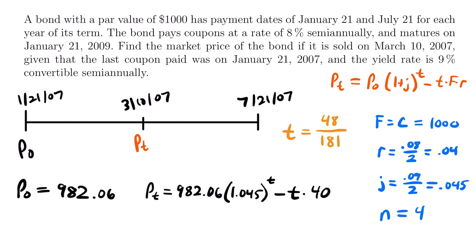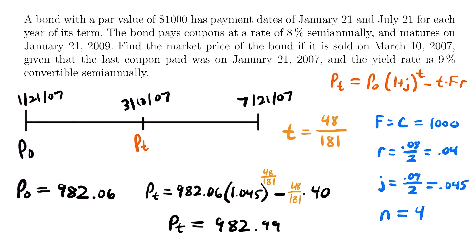Now that we have t = 48/181, we replace t in the market price calculation: P sub t equals 982.06 times (1.045)^(48/181) minus (48/181) times 40. Plugging all of this into your calculator, you will find that P sub t equals $982.99. That is the market price of this bond on March 10th, 2007, a date that takes place between two coupon dates.